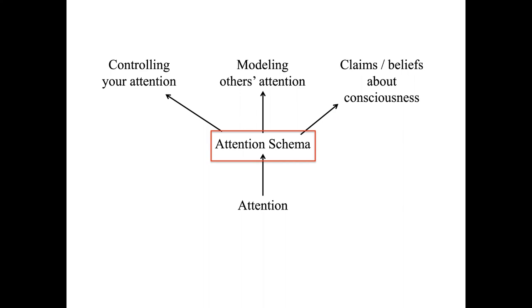The theory therefore pulls together three processes. First, the incredibly useful ability to control your own attention, without which you can't really function in the world. Second, the incredibly useful ability to model other people's attention and make predictions about their behavior. And third, the least important outcome. The theory explains why we're so certain that we have a kind of magic essence of conscious experience in us.